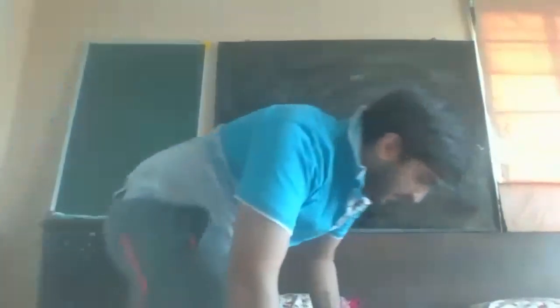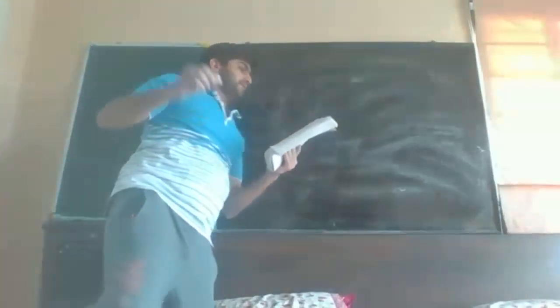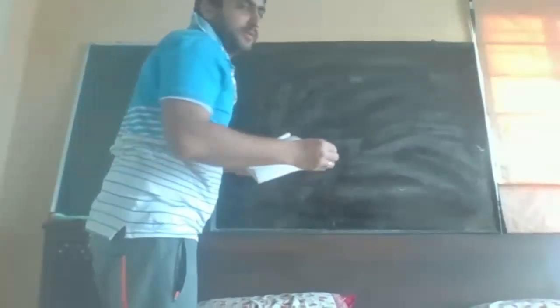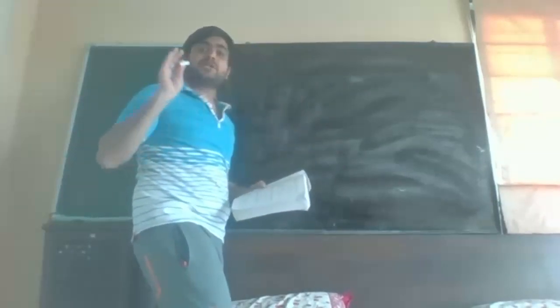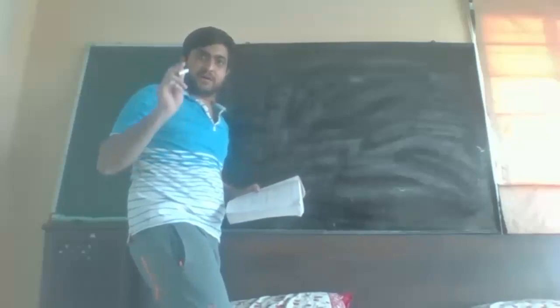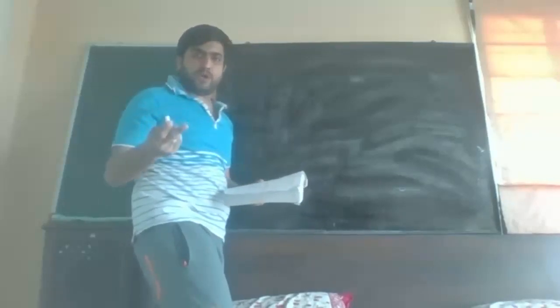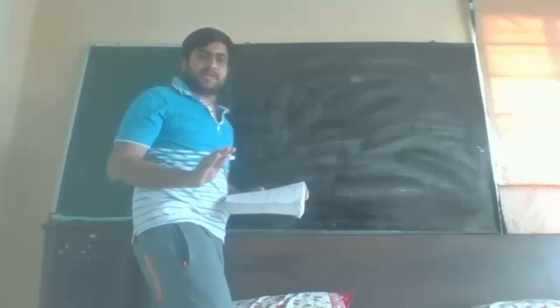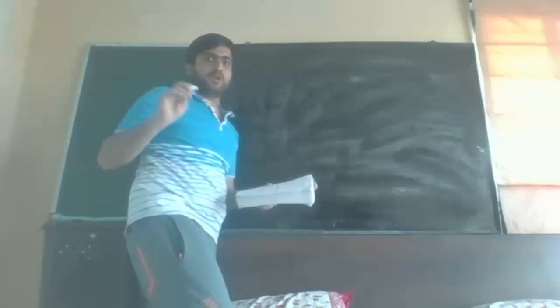Continuing with our previous lecture, we verify whether the following are zeros of a polynomial. I will teach you how to find zeros of a polynomial. If your answer comes equal to 0, then it is a zero of a polynomial. If it is not coming 0, then it is not a zero of a polynomial. Starting with our first sum.